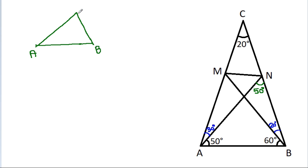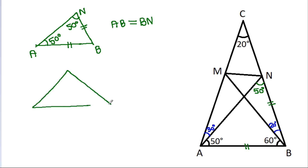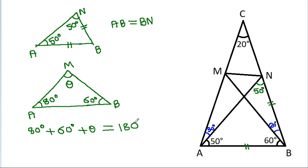Now in triangle ABN, this angle is 50 degrees and this angle is 50 degrees, so AB will be equal to BN. For the other part, this angle is 60 degrees and this angle is 60 degrees. Suppose the remaining angle is theta; so 80 degrees plus 60 degrees plus theta equals 180 degrees, giving theta equal to 40 degrees. This angle will be 40 degrees.